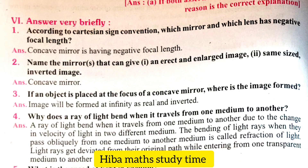Hello students, welcome to Hibamax study timeline. Standard signs — learn unit 6, Light lesson order. Answer very briefly. First part learn: according to Cartesian sign convention, which mirror and which lens has a negative focal length?